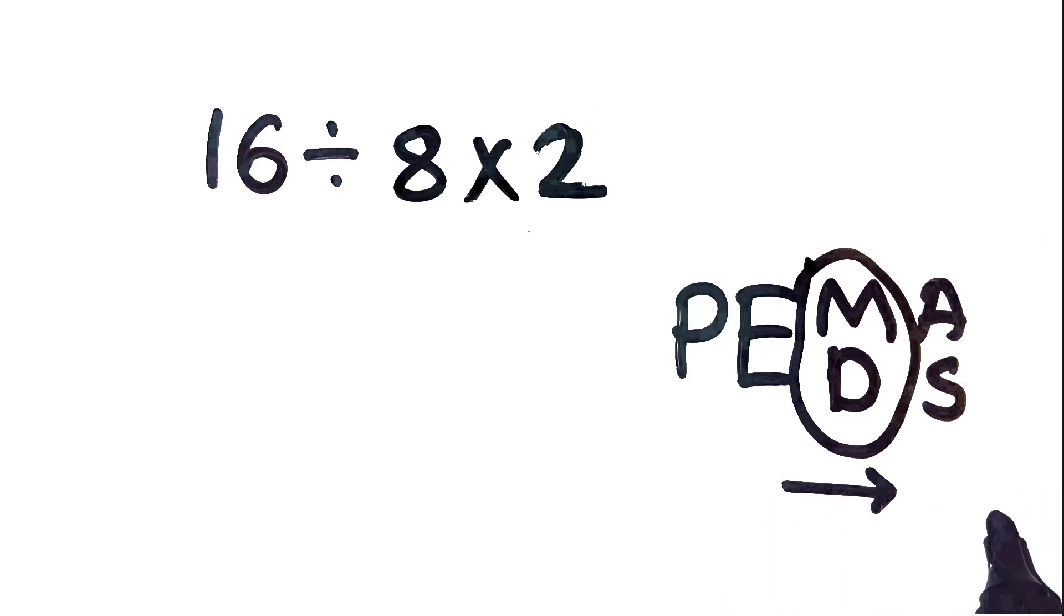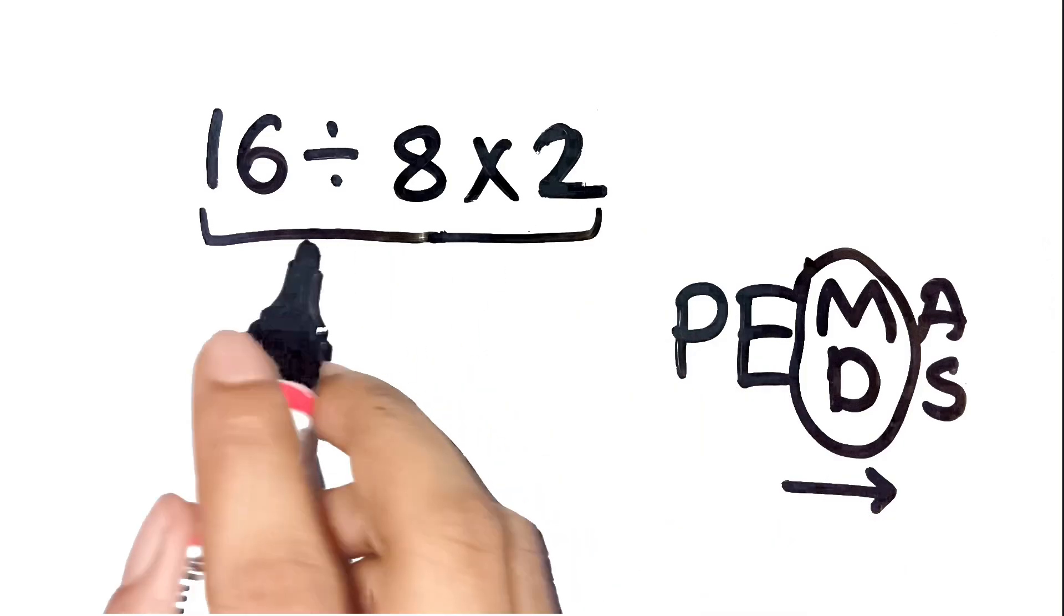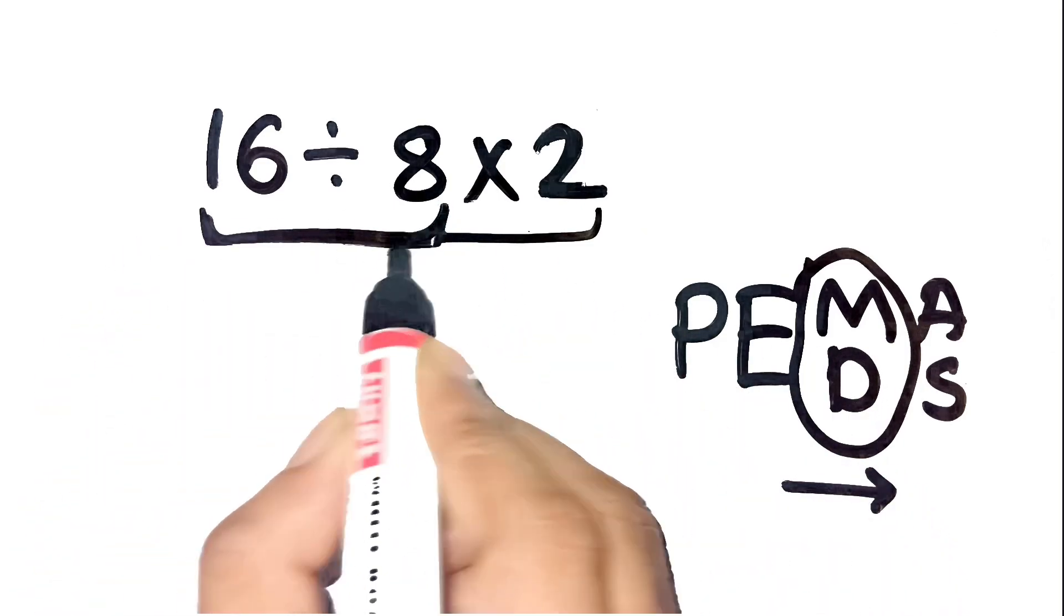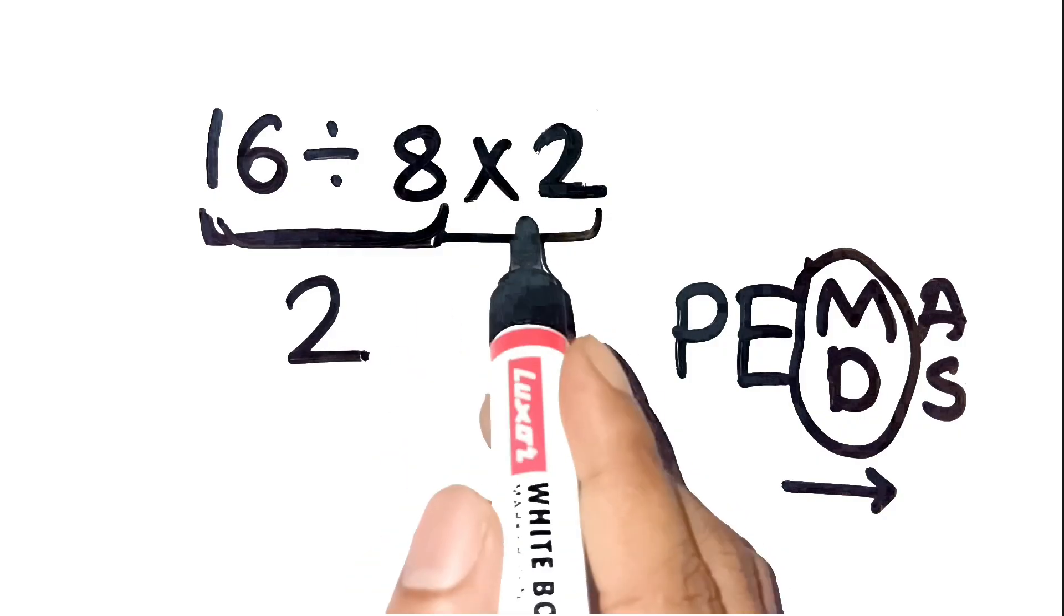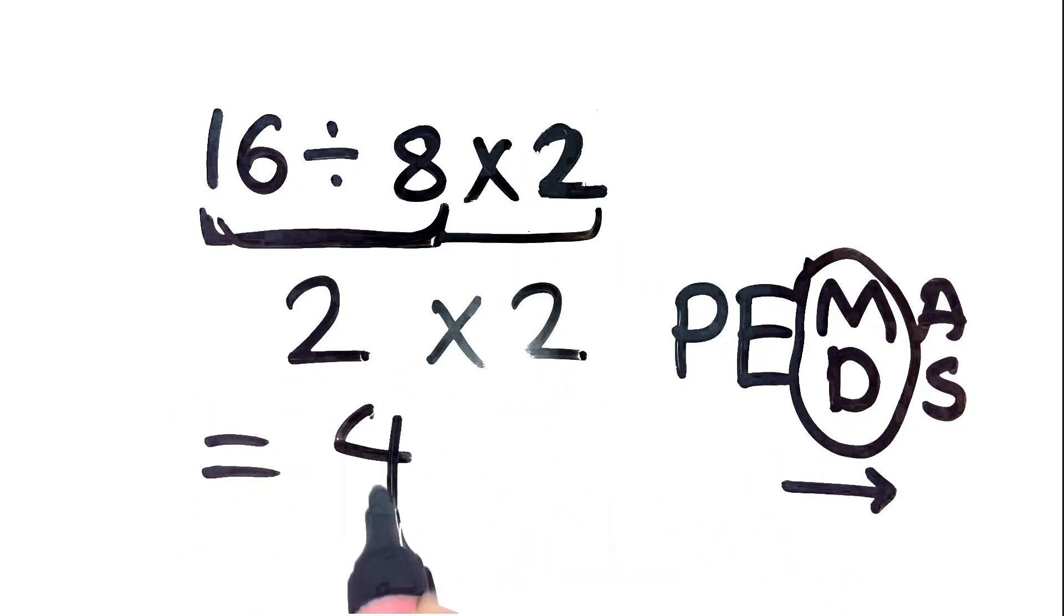Let's redo the problem properly. We have 16 divided by 8 times 2. Following PEMDAS, we start from the left. 16 divided by 8 equals 2. Then we take that 2 and multiply by 2. 2 times 2 equals 4.